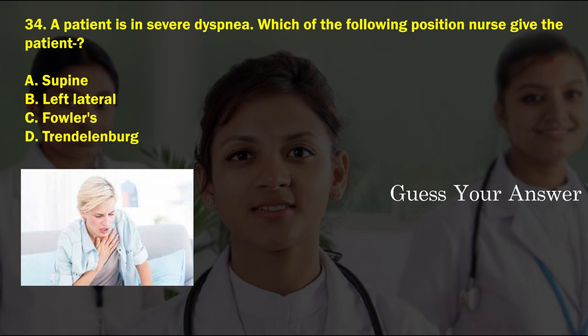A patient is in severe dyspnea. Which of the following positions should the nurse give the patient? Option A: supine, option B: left lateral, option C: Fowler's, option D: Trendelenburg. The correct answer is option A, supine.